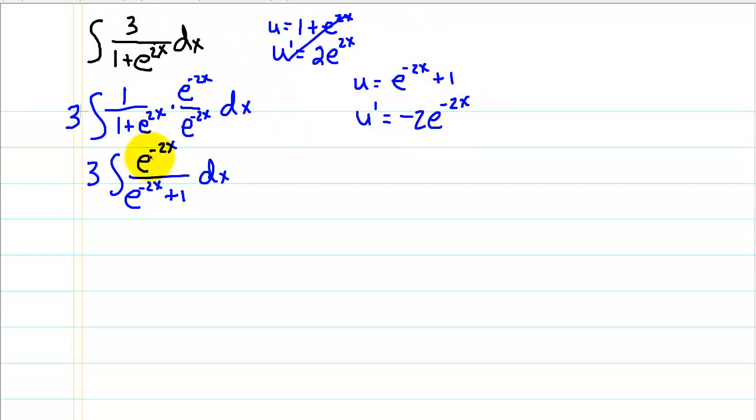So to create our u prime over u, we need a negative 2 here, and again if we insert a negative 2 on the numerator, we need to undo it by dividing by negative 2 outside of the integral sign. So now we have, on the top here, we have u prime, and the bottom we have u, and our integral of u prime over u is the natural log of u, so now we can integrate.